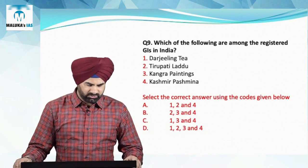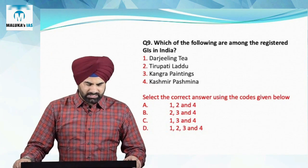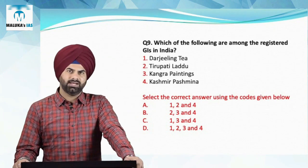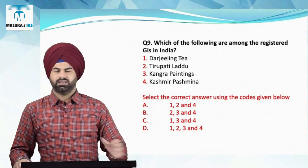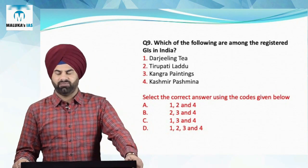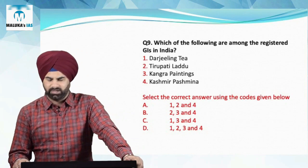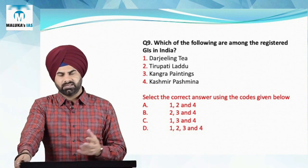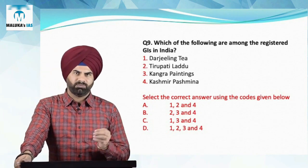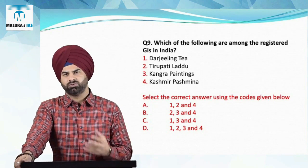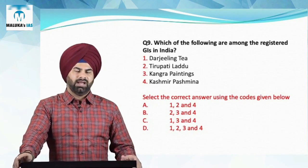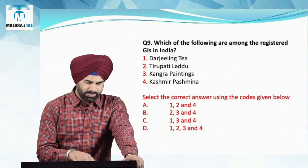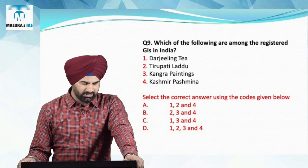Question number nine: which of the following are registered as geographical indicators? Darjeeling tea, Tirupati laddu, Kangra painting, and Kashmir products — all four are correct. A geographical indicator is a product, whether agricultural, natural, or manufactured such as handicrafts or industrial goods, originating from a definite geographical territory with specific characteristics of taste or craftsmanship unique to that area.